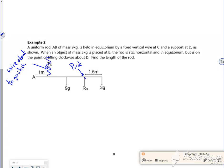So there's my pivot there. So I've got clockwise. So my clockwise moments are equal to my anticlockwise moments. I've got anticlockwise, so I've got 3g times 1.5 equals 9g times by...